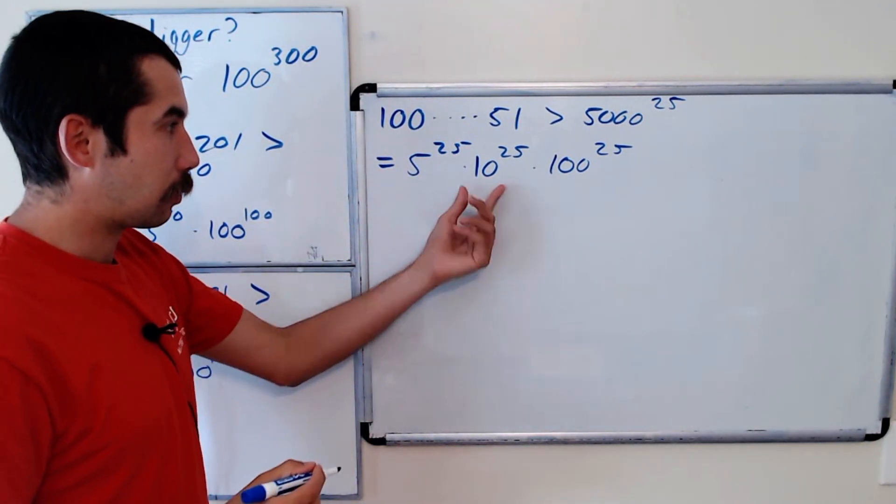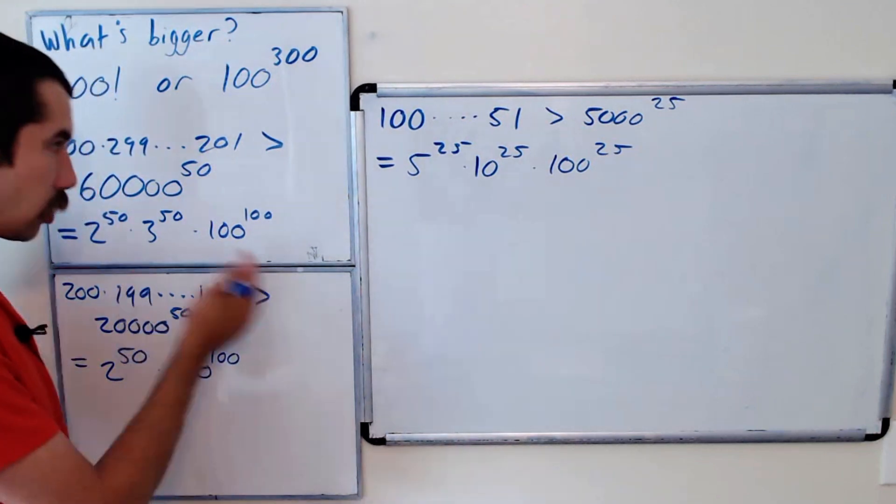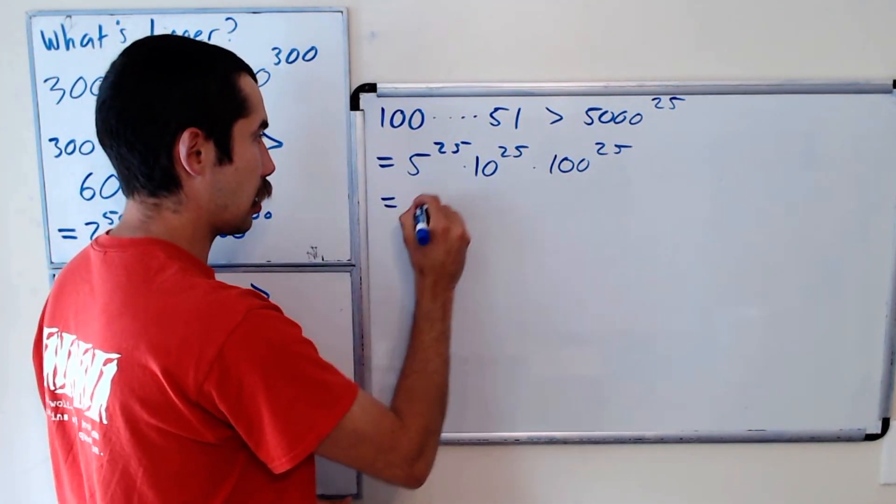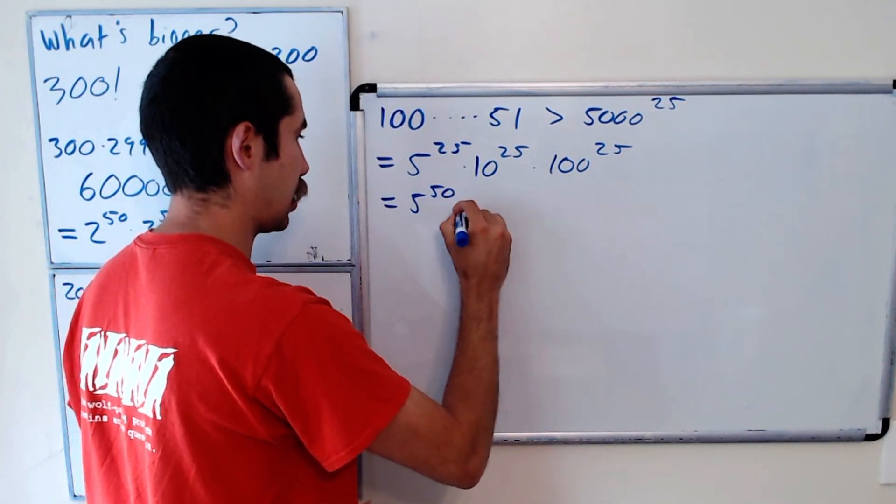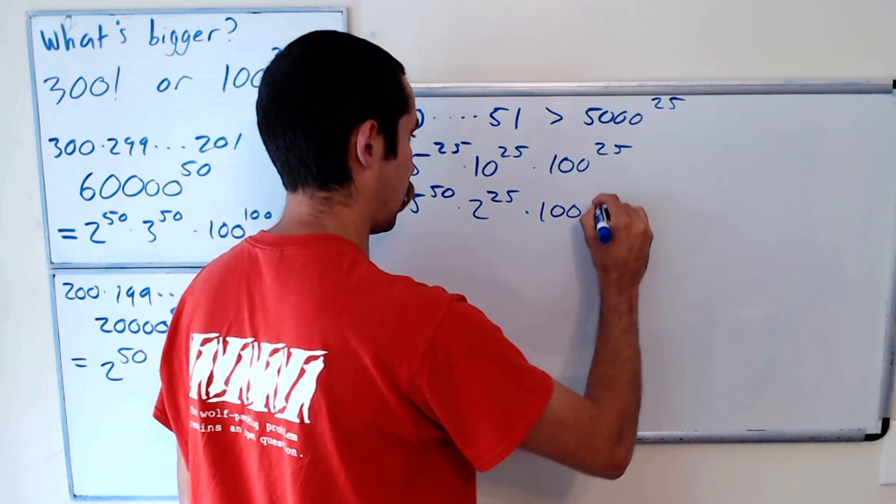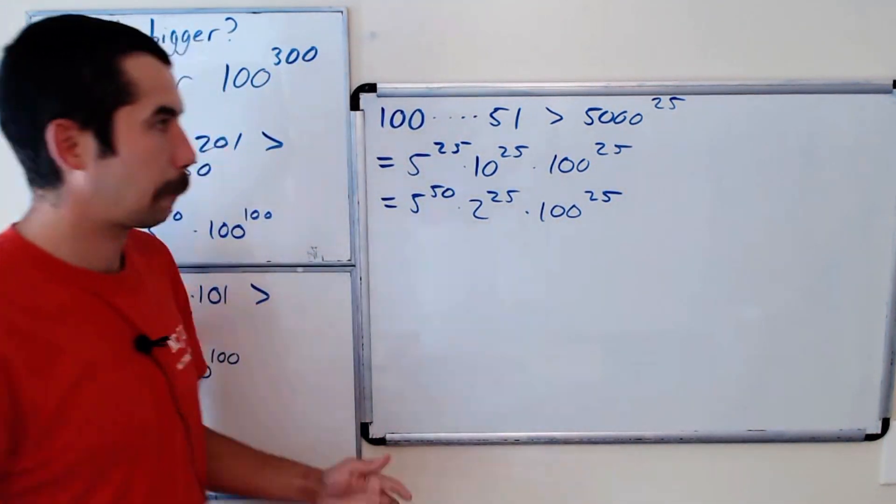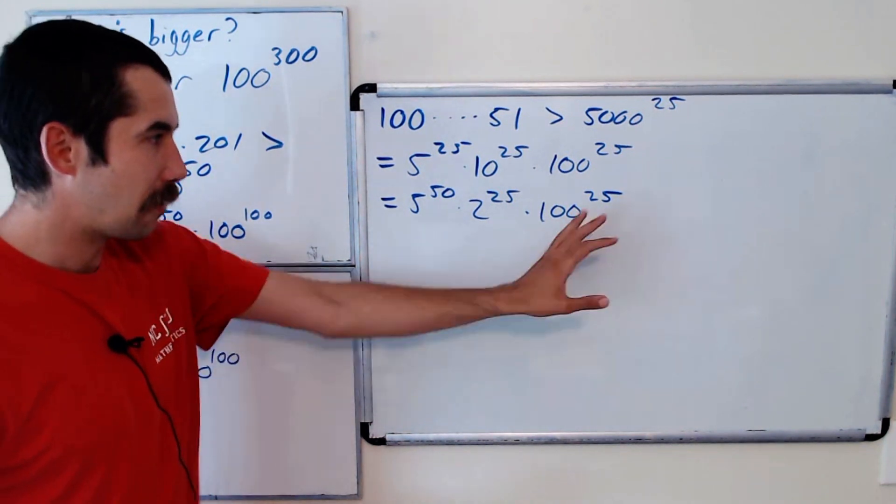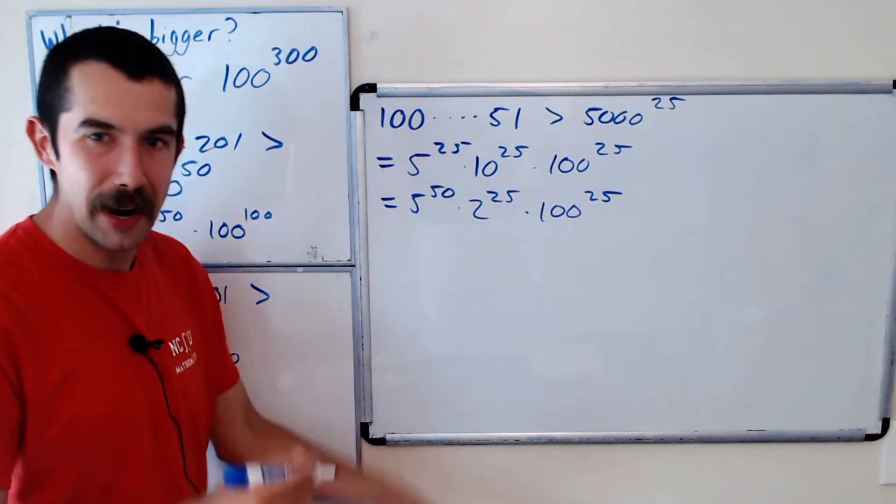Which let's pull out, let's break this into fives and twos. So it's in its prime factorization, which is 5 to the 50 times 2 to the 25 times 100 to the 25. Okay, so we have another 25 copies of 100. We're making progress.